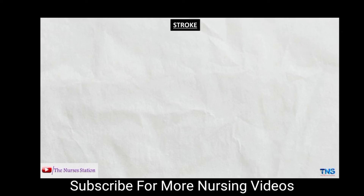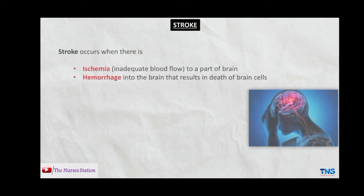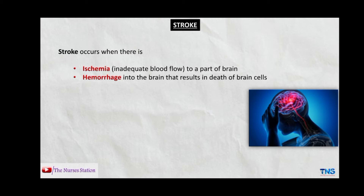In this video we will talk about the stroke, particularly about the ischemic stroke, and I will make a separate video on the hemorrhagic stroke and nursing management of stroke. A stroke occurs when the blood to a part of the brain is interrupted or reduced, preventing brain tissue from getting oxygen and nutrients, and due to this the cells of the brain start to die in minutes. A stroke occurs when there is ischemia — that is, inadequate blood flow to a part of the brain — or there is hemorrhage, that is bleeding into the brain, that results in the death of brain cells.